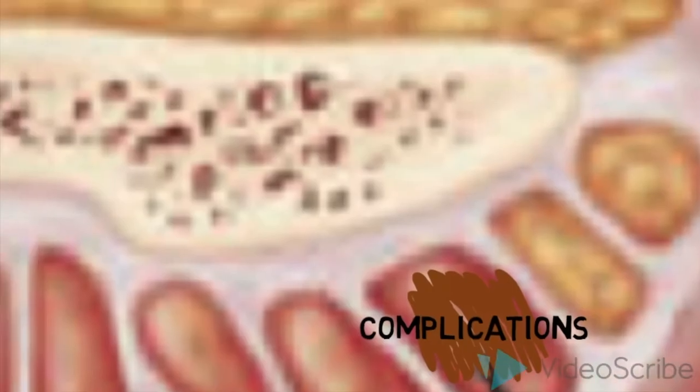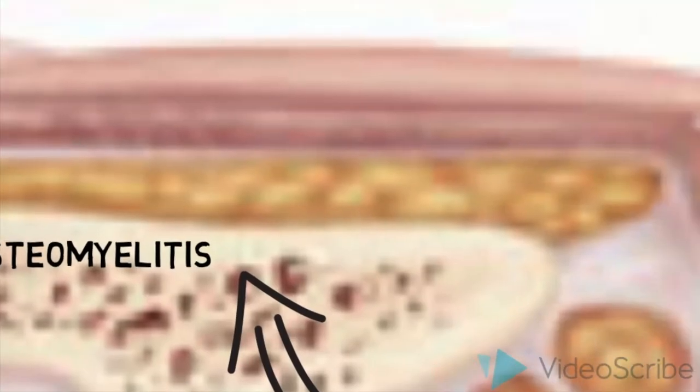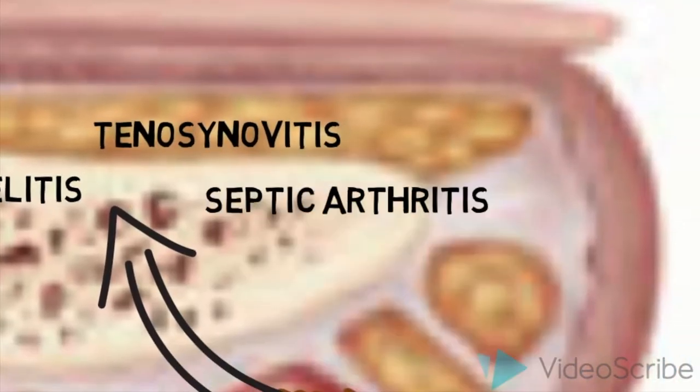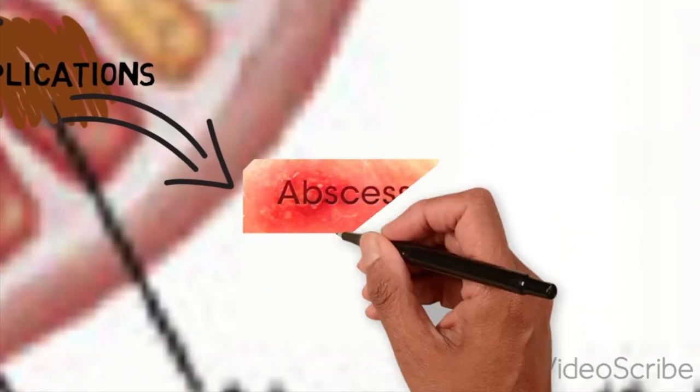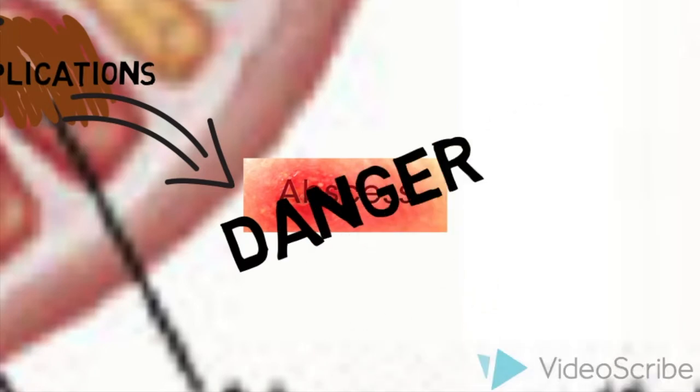Complications include posterior spread, which may result in osteomyelitis, flexor tenosynovitis, and septic arthritis. Or anterior spread, causing a collar-stud abscess, which can burst, relieving the pain, but which is a danger sign, as the overlying skin can become necrosed.